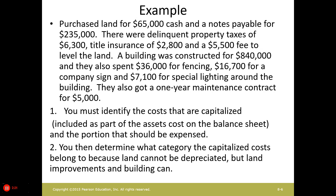Here is an example. We bought a piece of land for $65,000 with a notes payable. It had delinquent property taxes, which are included. We have title insurance that we have to pay and the cost of leveling the land. Then we constructed a building. In addition, we put in fencing, the company sign, and special lighting. We also signed a one-year ongoing maintenance contract for the property.